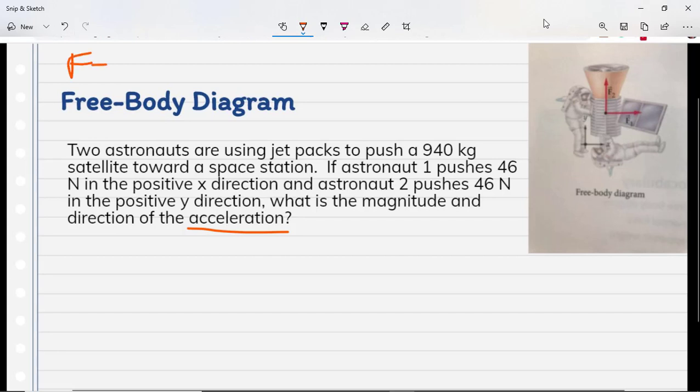First off, that force equals mass times acceleration, right? F equals ma. Really important concept here. So we know the mass. The mass here is 940 kilograms. Now we can figure out the force and then be able to determine the acceleration. So let's think about this for a second. We've got one astronaut pushing 46 newtons in the positive x direction.